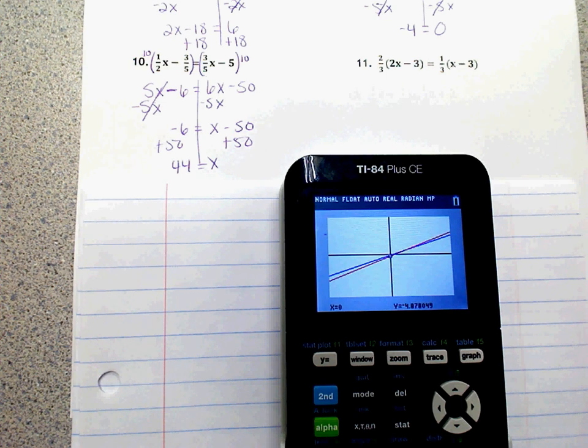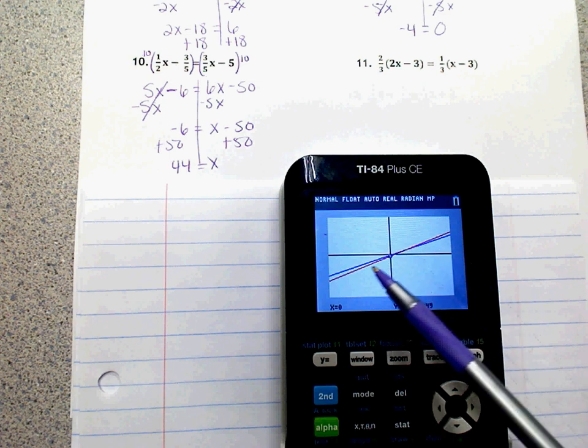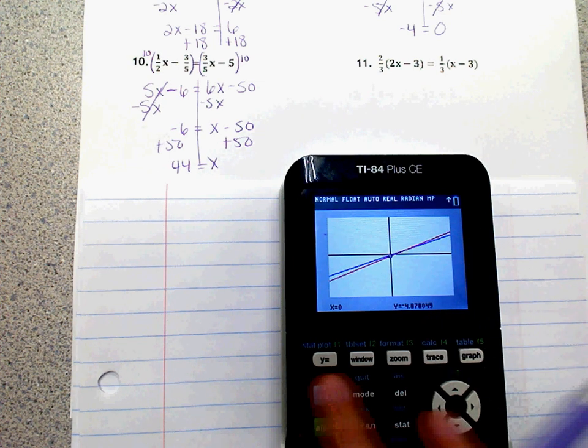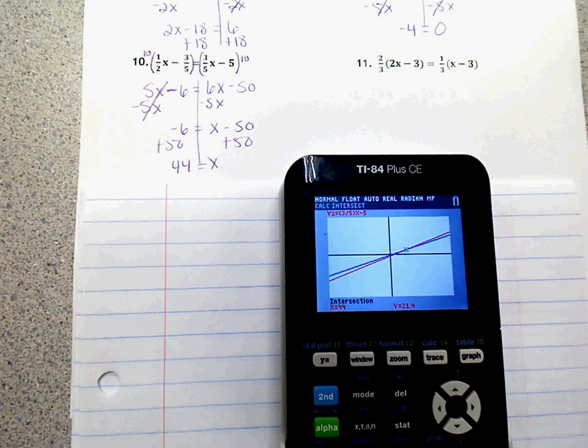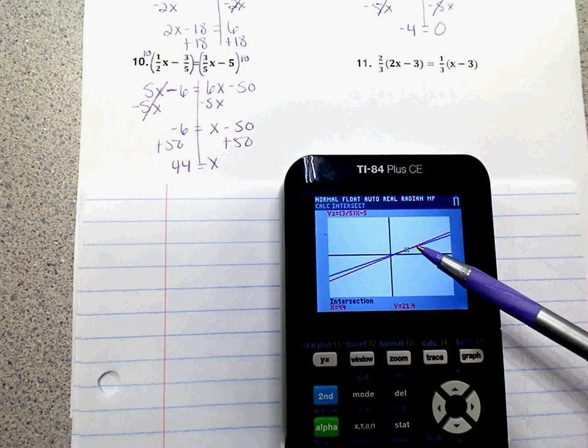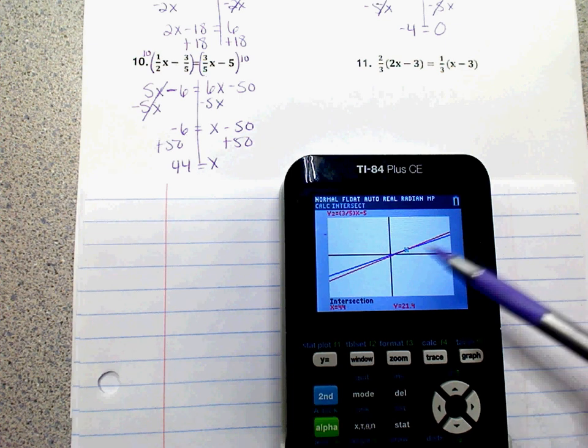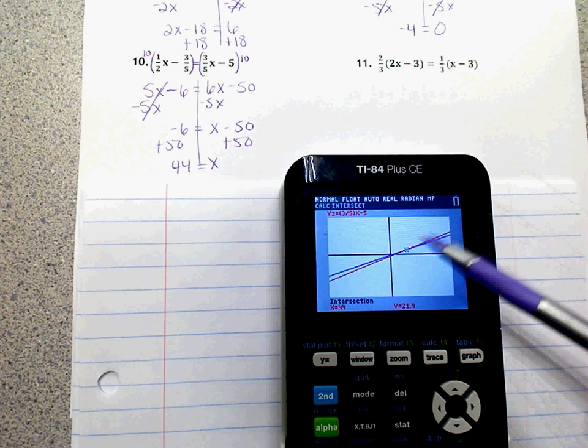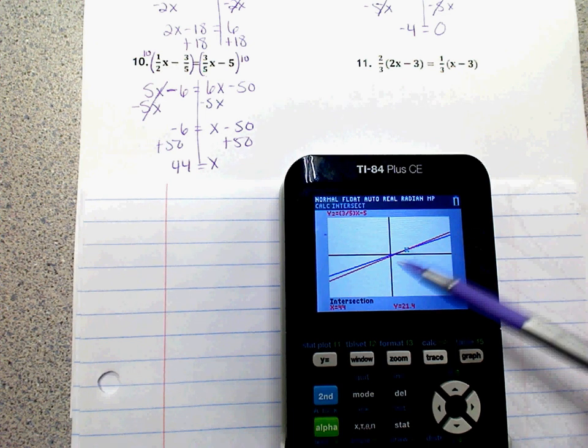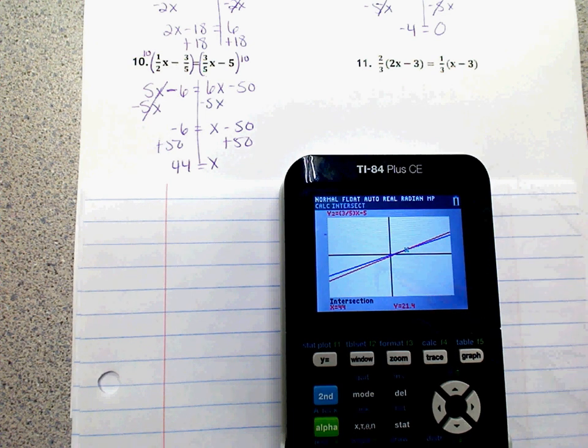So now we can actually see. We know that the red line was below, and now it's above. So second, trace, 5, enter, enter, enter. And x equals 44. So if you can't see the intersection, you're going to have to zoom out. That one was kind of hard to tell if they intersected before we zoomed out again. So you may have to if it gives you that error message. So x equals 44 is our answer for number 10.